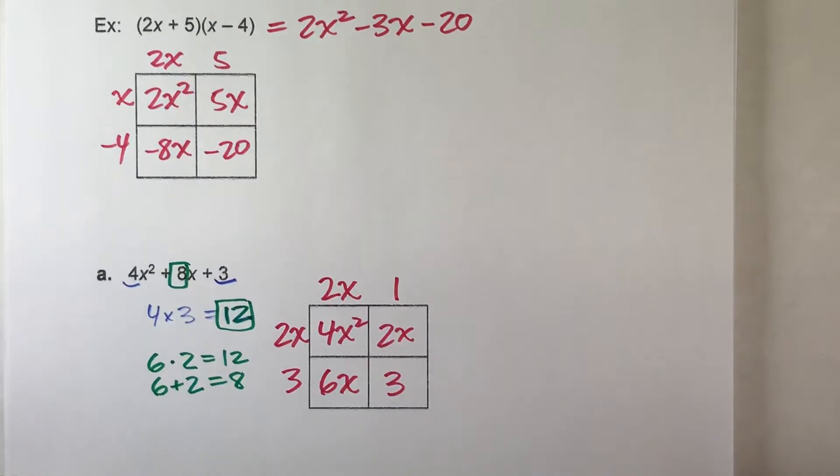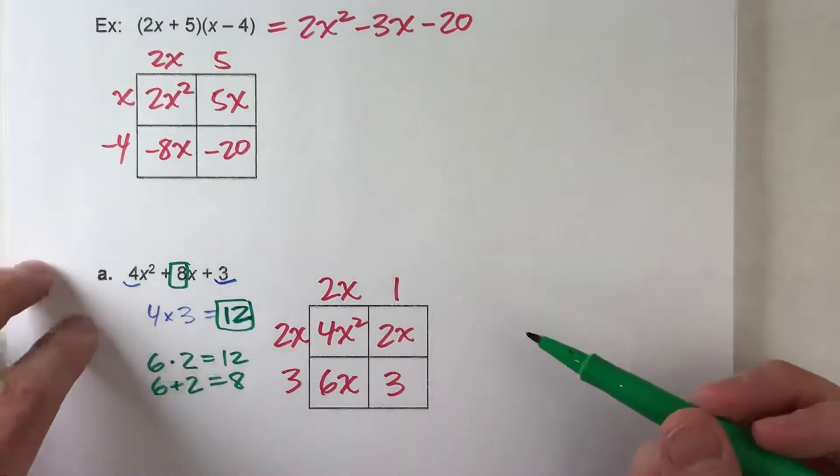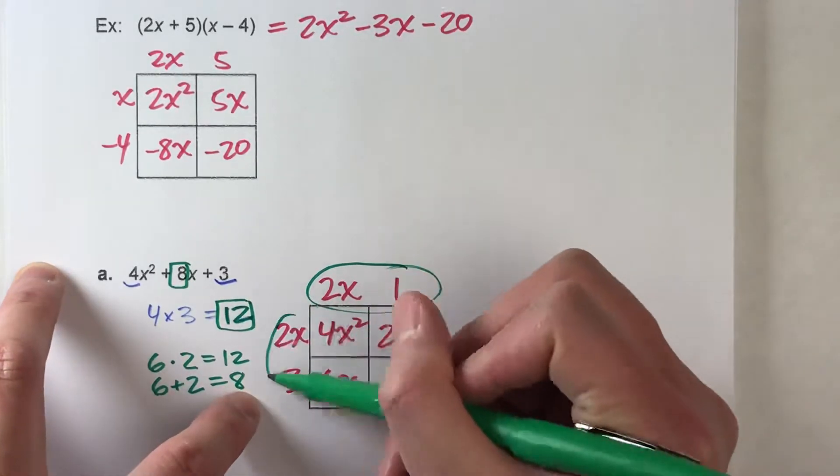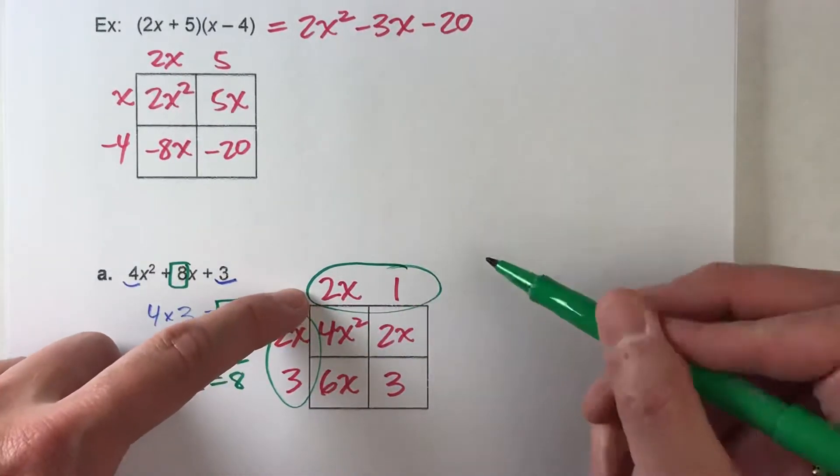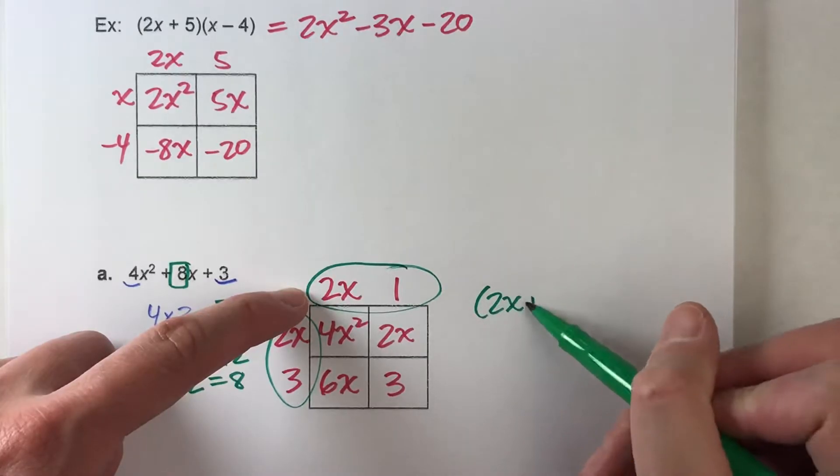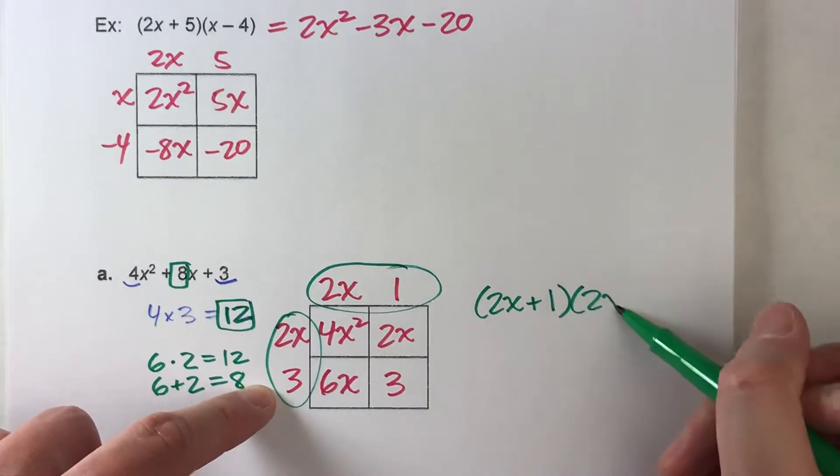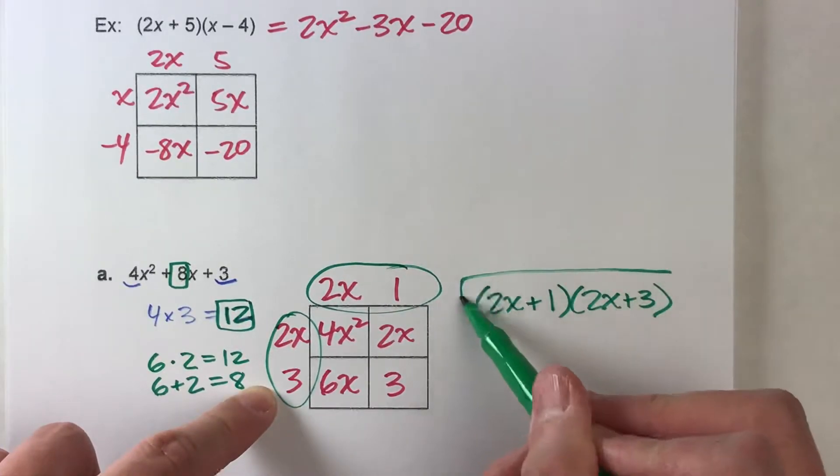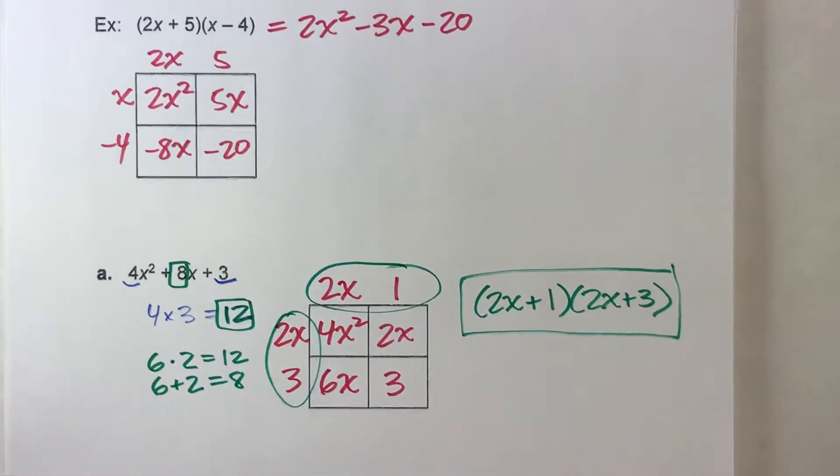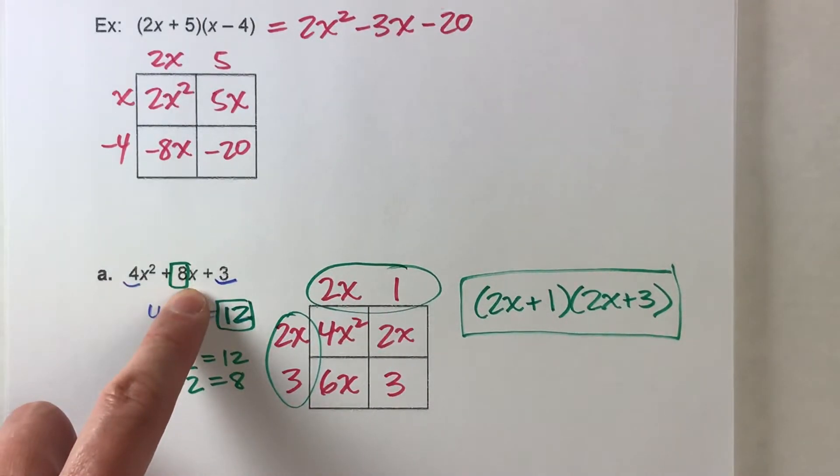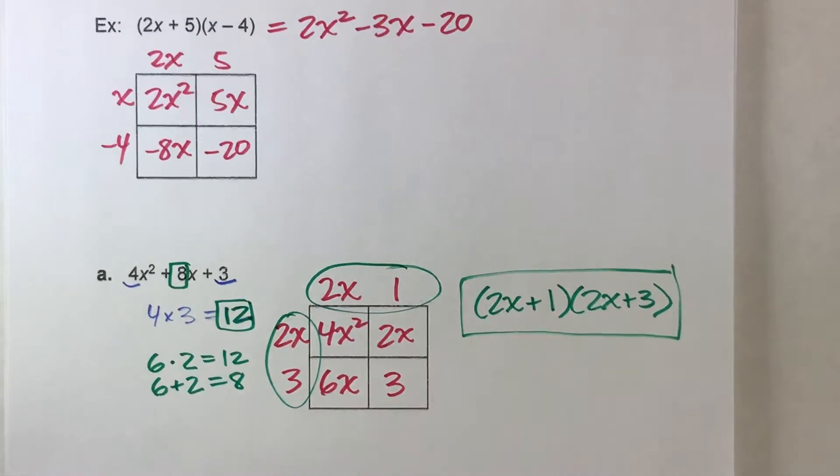Now, the reason why we need those numbers is because those are factored form. Remember what we said. The area of the box is length times width. So our length is 2x plus 1. Our width is 2x plus 3. This is our factored form. So this quadratic can be factored as that.